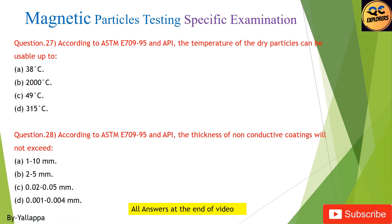Question 27: According to ASTM E709-95 and API, the temperature of dry particles can be usable up to: (A) 38°C; (B) 2,000°C; (C) 49°C; (D) 315°C.